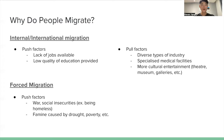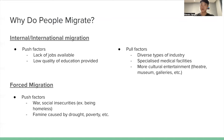So why do people migrate? To talk about the reasons for internal and international migration, the push factors are the lack of jobs available and the low quality of education. The pull factors are diverse types of industry which can provide more diverse jobs, specialized medical facilities, and also more entertainment like theaters, museums, and galleries.